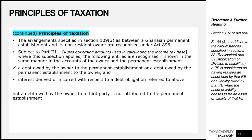The arrangements specified in section 109(3) as between a Ghanaian PE and its non-resident owner are recognized under the Income Tax Act. Under section 109(3), in addition to the circumstances specified in section 38 — which deals with realization of assets and liabilities — and section 39 — which modifies the principles for realization — a PE is considered as having realized an asset held by that PE or a liability owed by that PE when the asset or liability ceases to be an asset or liability of that PE.